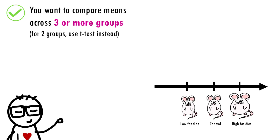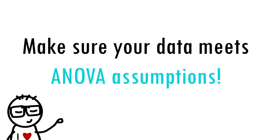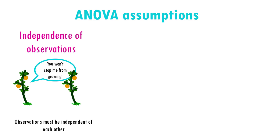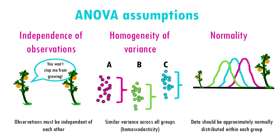To recap: ANOVA, or analysis of variance, is a statistical method used to test whether there are significant differences between the means of three or more independent groups. To use ANOVA correctly, your data must meet its assumptions: independence of observations (each plant's height is independent), homogeneity of variance (variances in each group should be roughly equal — checkable with Levene's test; if violated, use Welch's ANOVA), and normality (data within each group should be normally distributed — if not, use the Kruskal-Wallis test).